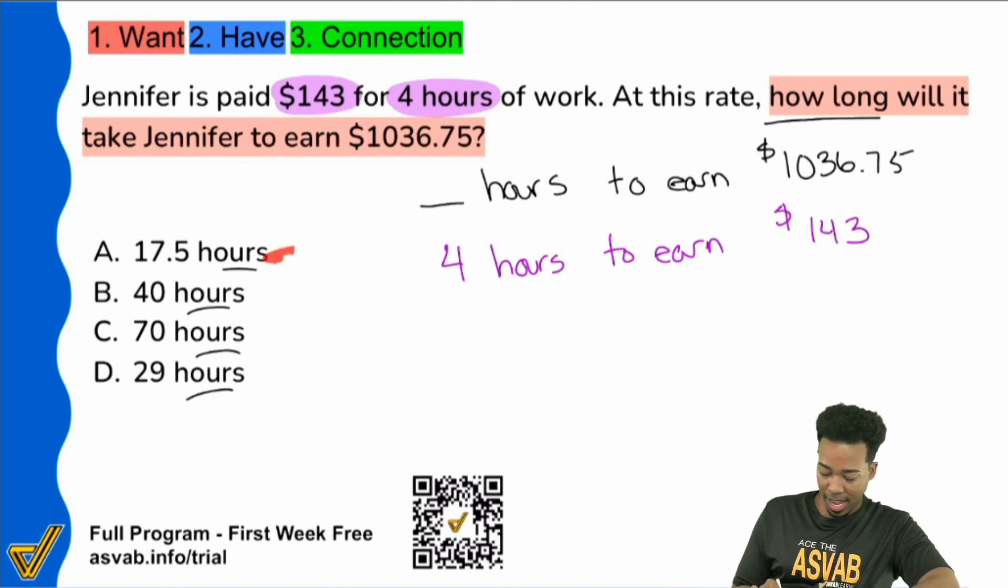simply because when you look at your choices, you have 17.5 hours, 29, 40 and 70. I would say that those are pretty spread out apart. I can definitely try here and eliminate at least two answer choices by doing this.